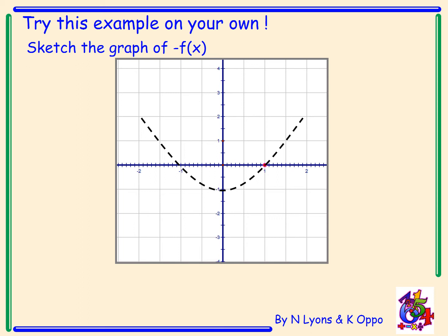And the answer. Each point is reflected over the x-axis and our new coordinates are A is (-1, 0), B is (1, 0) and C is (0, 1).